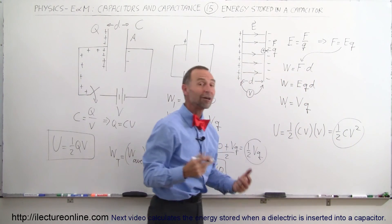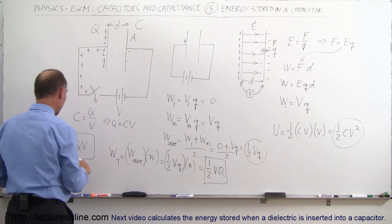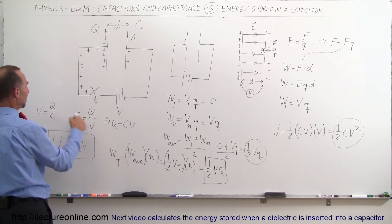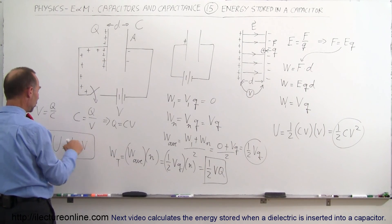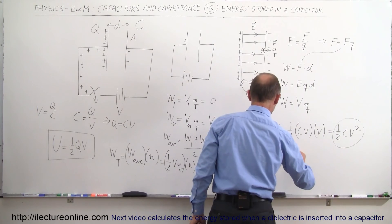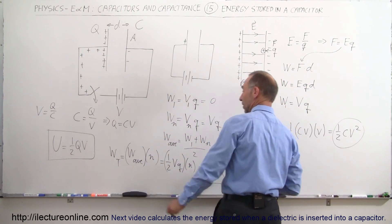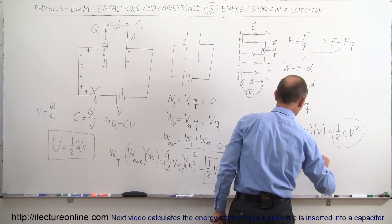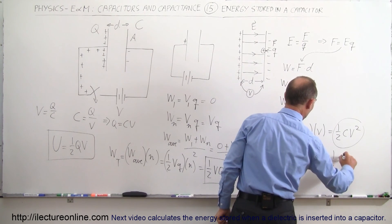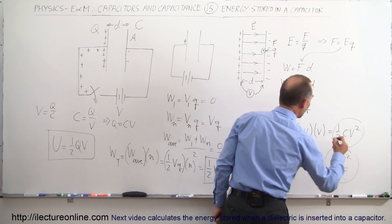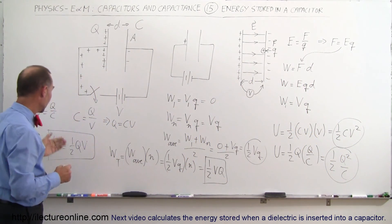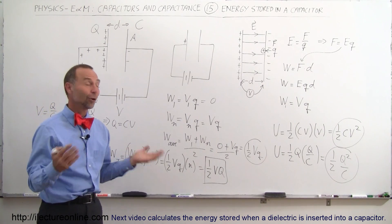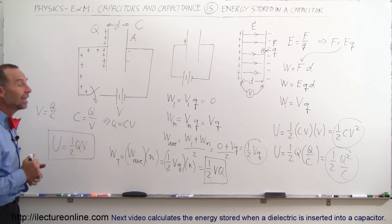Finally, we could replace V by Q over C — since V equals Q divided by C — and substitute that into the formula. We get U equals one-half times Q times Q over C, which equals one-half Q squared divided by C. So there are three ways to write the energy stored on a capacitor: one-half QV, one-half CV squared, or one-half Q squared divided by C. In all three cases, that is the energy stored on a single capacitor.